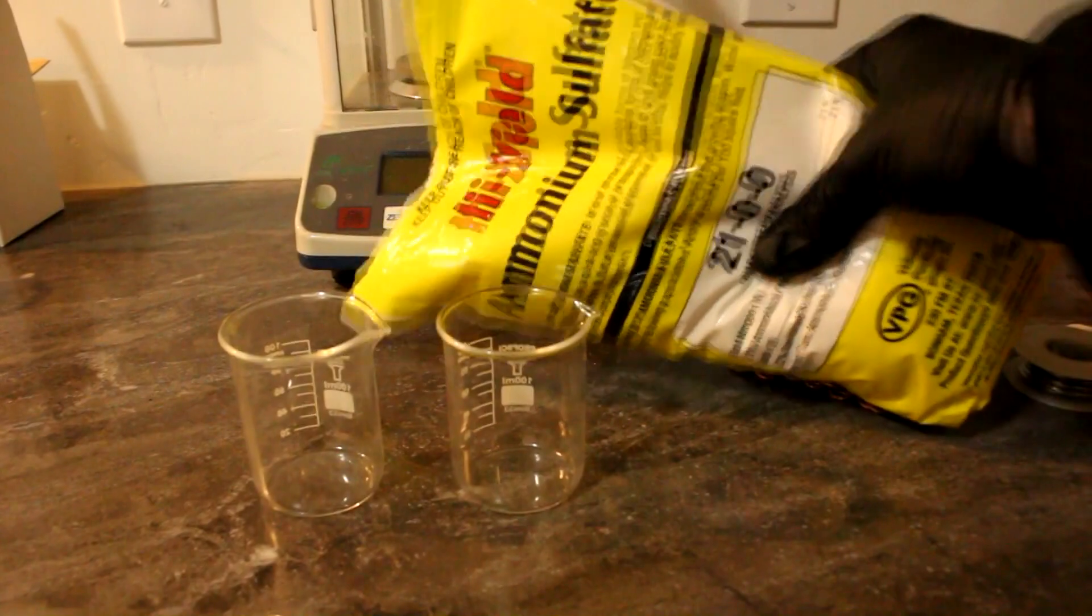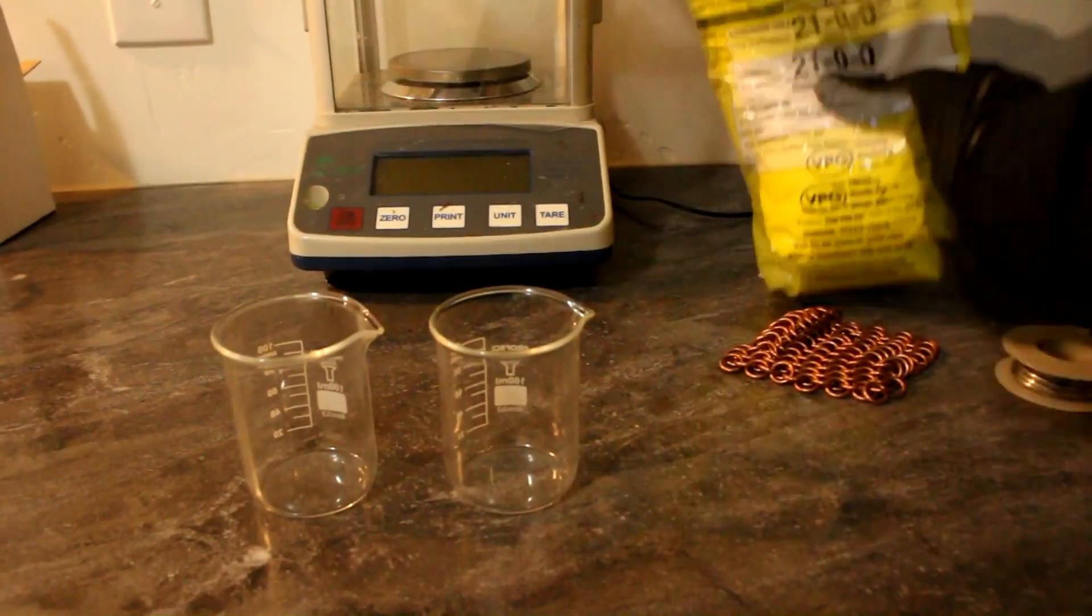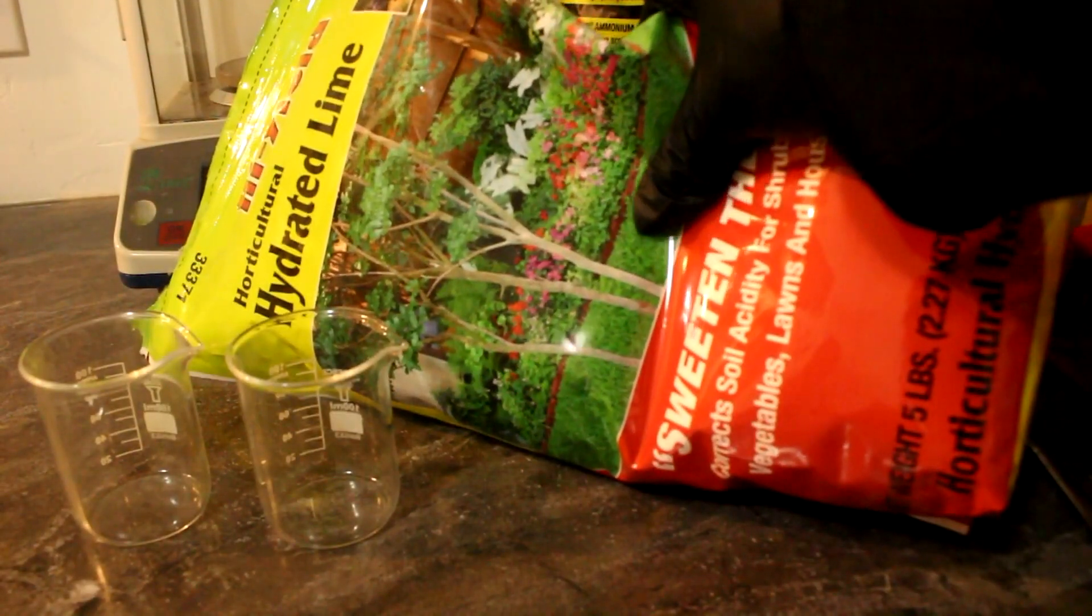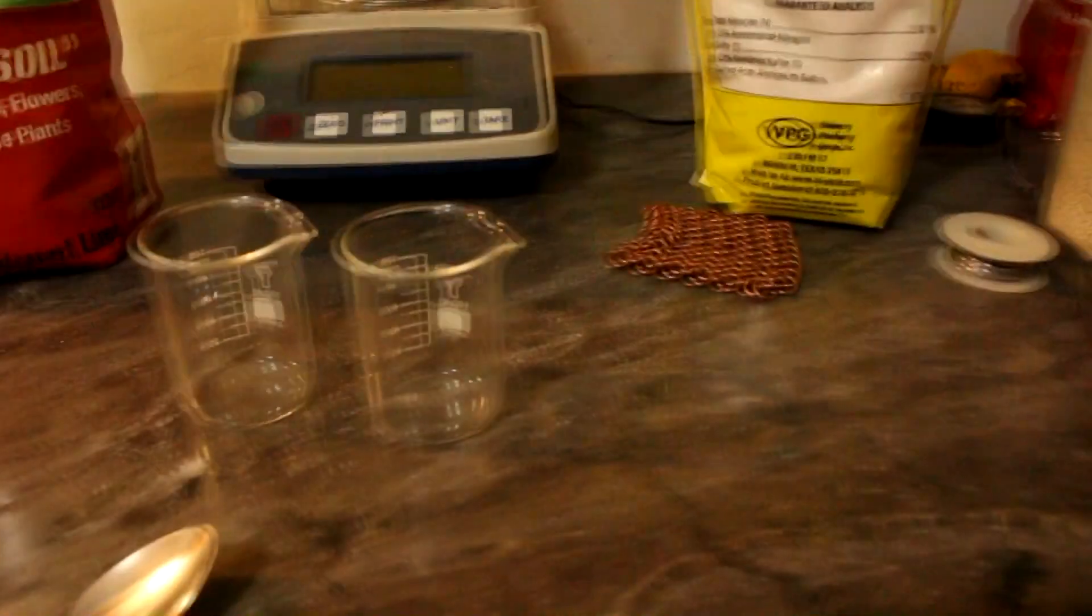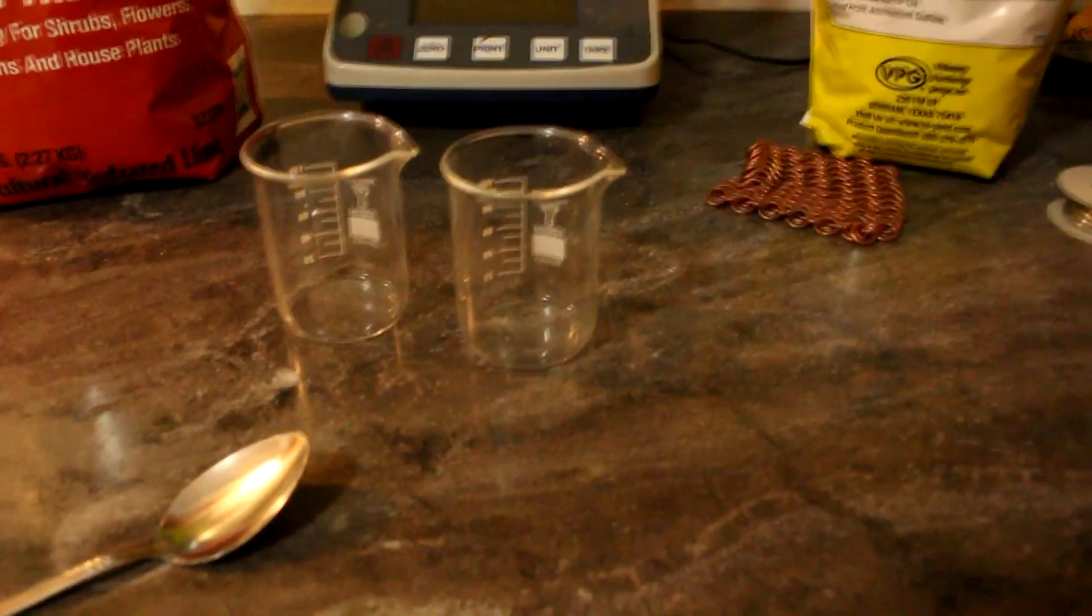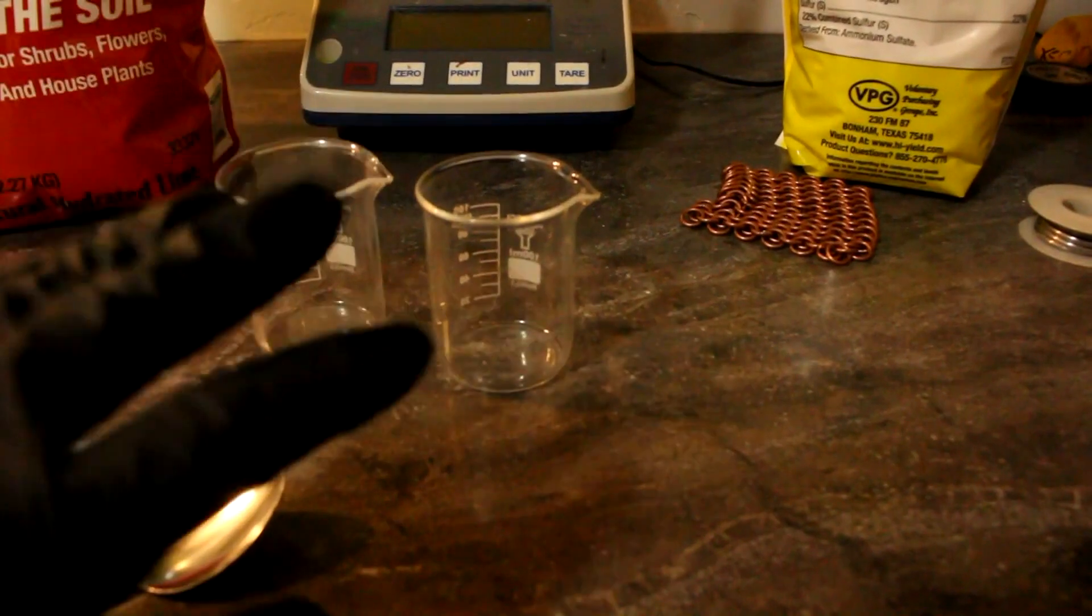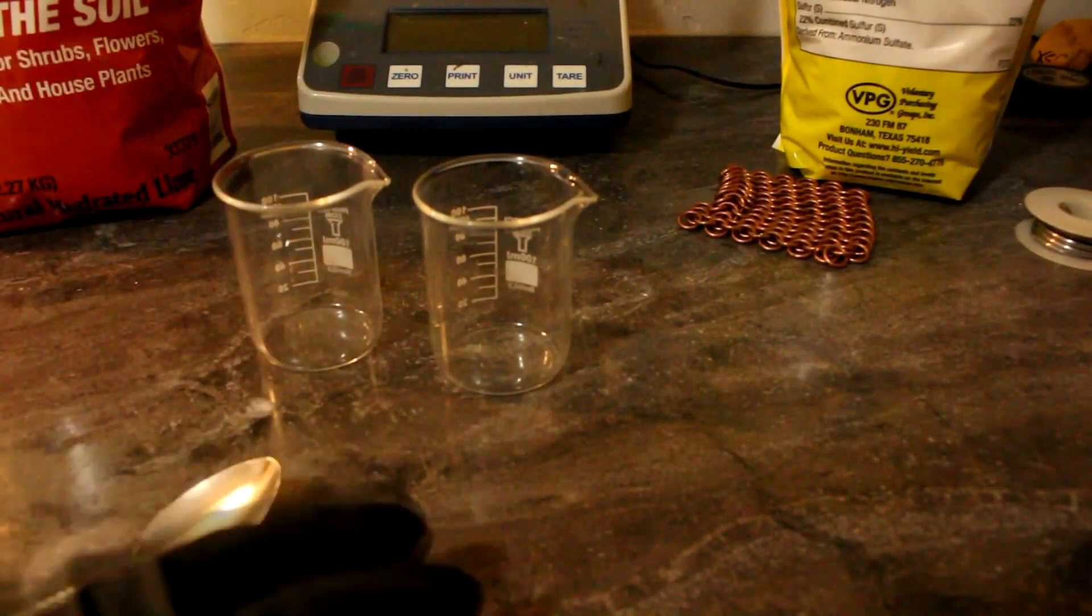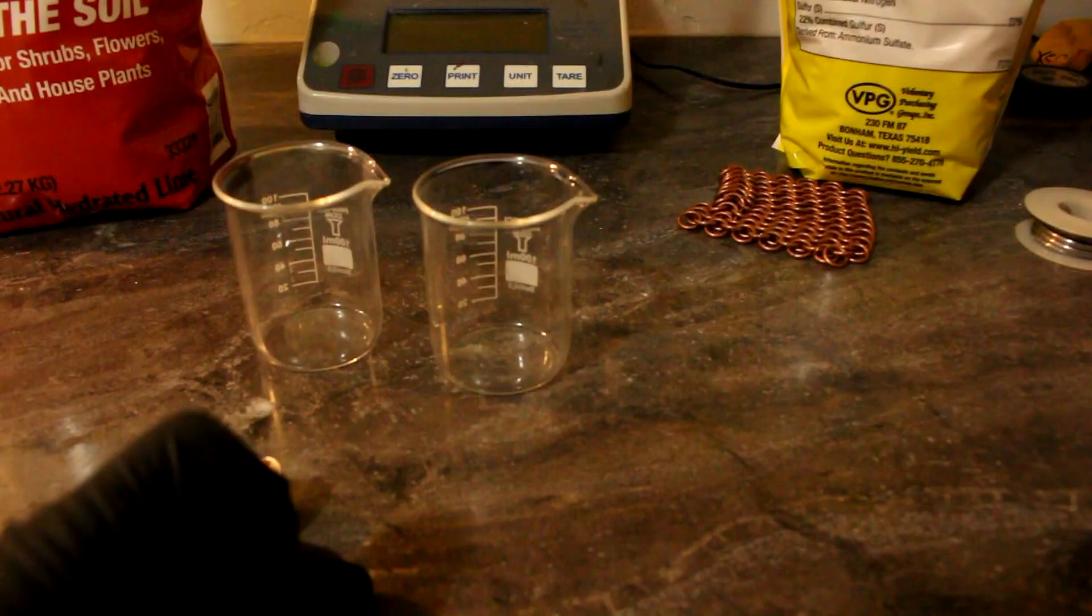So the reagents I'm going to use are ammonium sulfate as the source of ammonia and agricultural lime. This is calcium hydroxide. Now most other channels I've seen do this have used like ammonium chloride and sodium hydroxide and well you really can't buy those 50 pounds at a time from the hardware store.